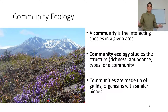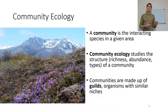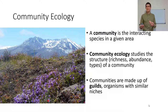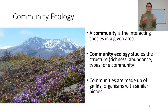This is a community ecology lecture covering the principles of community ecology. A community is defined as the interacting species in a given area. We can see some flowers and some grasses here. These flowers are competing with each other for space, being pollinated by various pollinators, and those pollinators are being eaten by various predators. This is the community. Community ecology studies the structure of a community — richness, abundance, and what types of species are present.